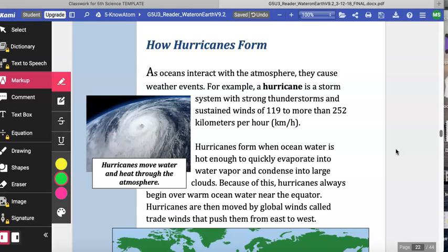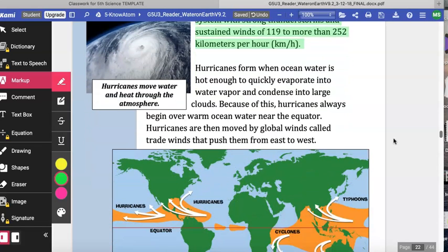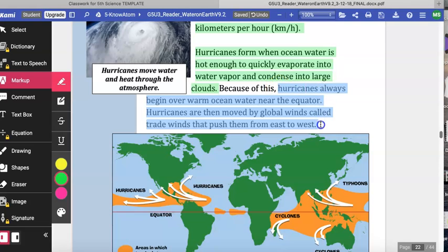As oceans interact with the atmosphere, they cause weather events. For example, a hurricane is a storm system with strong thunderstorms and sustained winds of 119 to more than 252 kilometers per hour. Hurricanes form when ocean water is hot enough to quickly evaporate into water vapor and condense into large clouds. Because of this, hurricanes always begin over warm ocean water near the equator. Hurricanes are then moved by global winds called trade winds that push them from east to west.